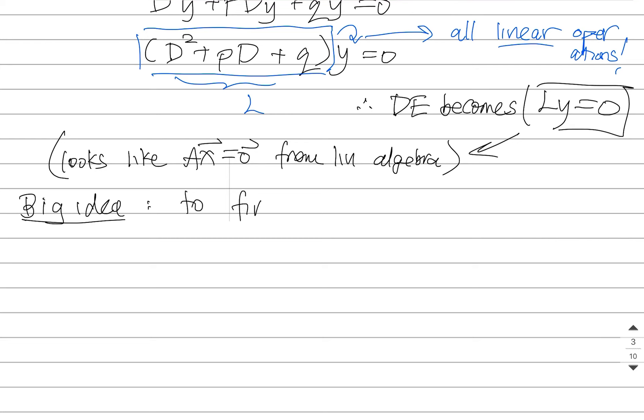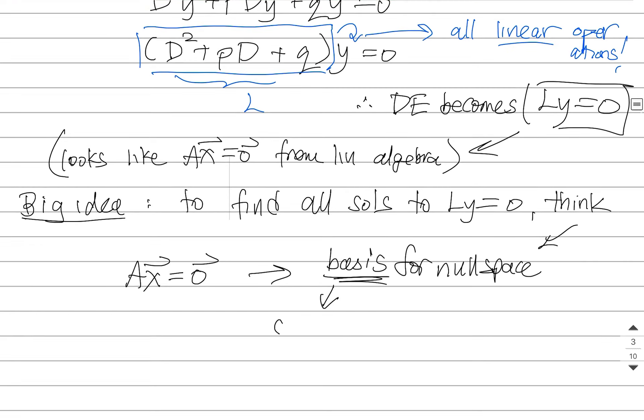To find all of the solutions to L(y) equals zero, we are going to think of it like finding the solutions to Ax equals zero. And what I mean by that is if I'm looking for the solutions to Ax equals zero, that means I'm trying to find what's called a basis for the null space.